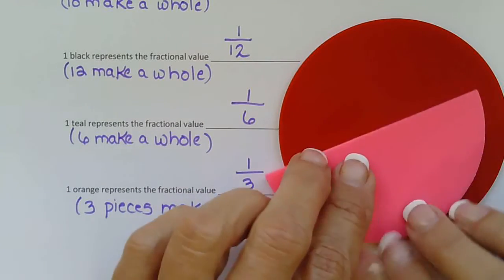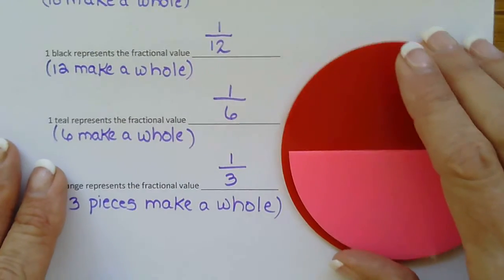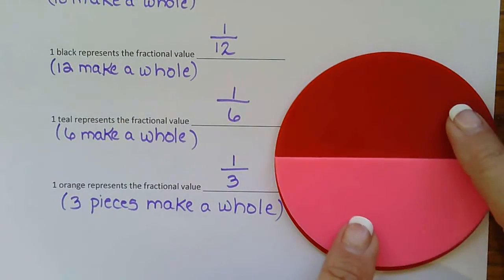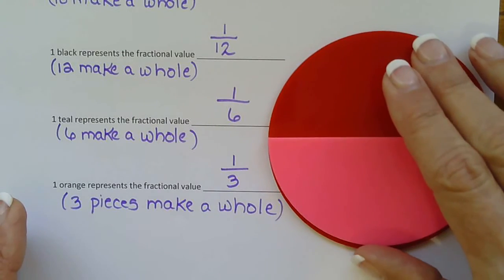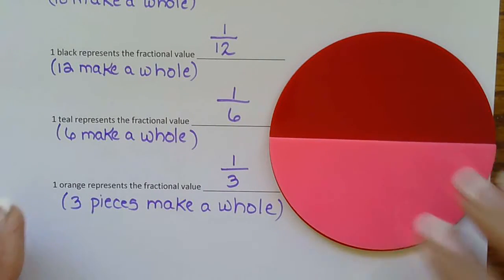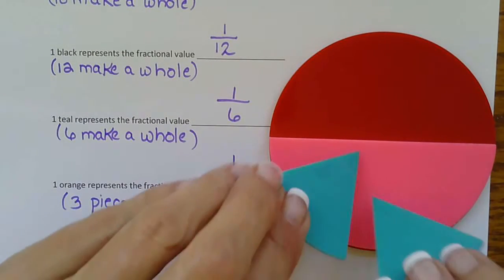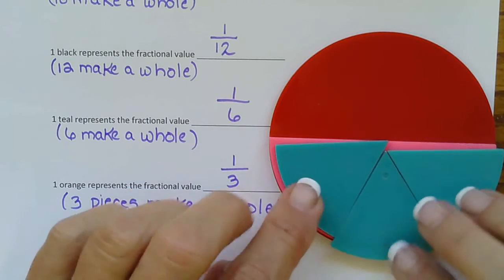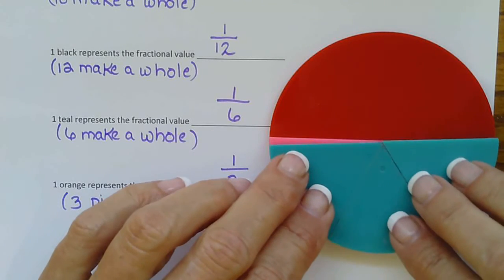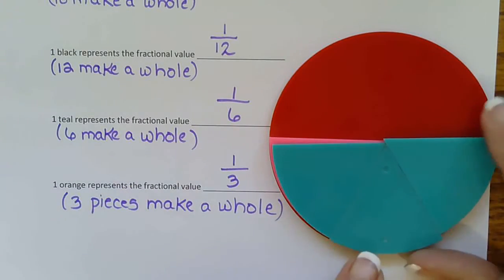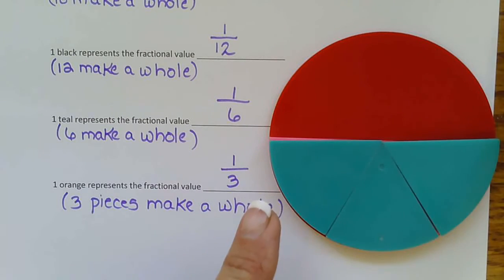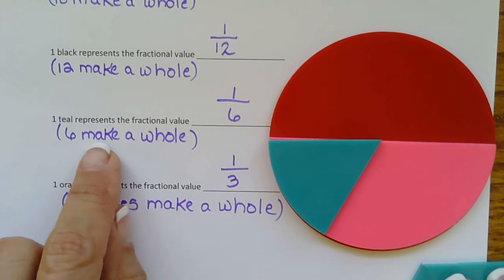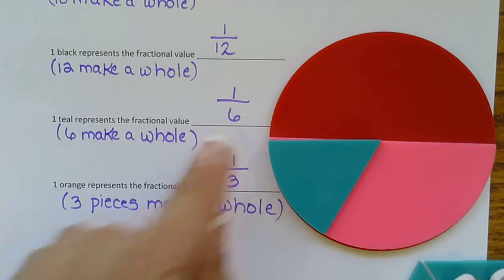Okay, next we're going to look at teal. So I'll keep this in. So when we look at teal, we can see three teal make a half. So three more added to that would make a whole. So does everyone agree? Six teal make a whole circle. That means one piece is going to be one sixth.